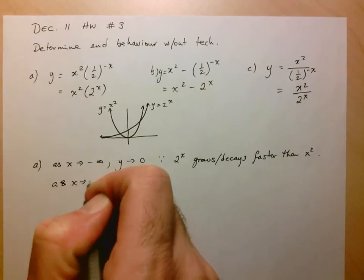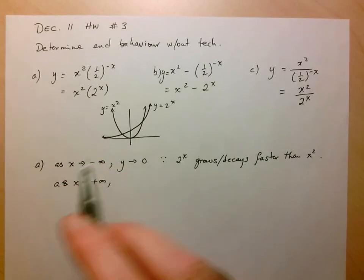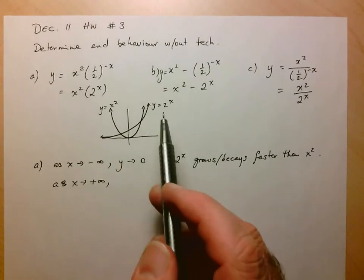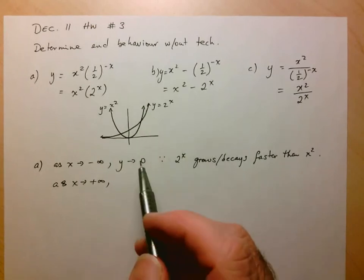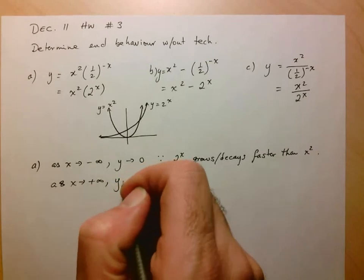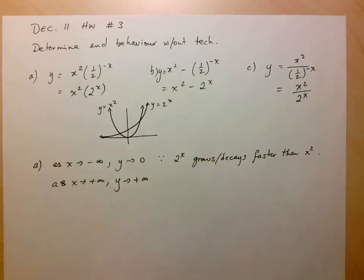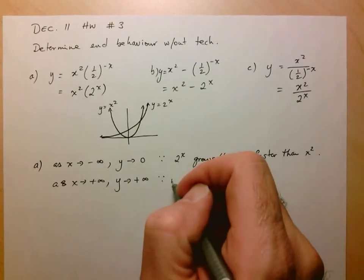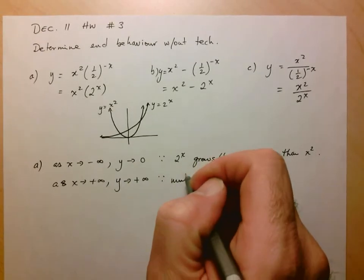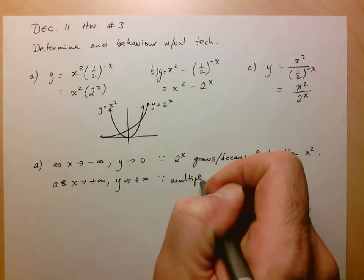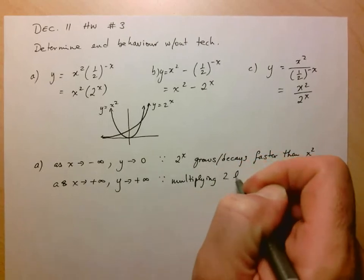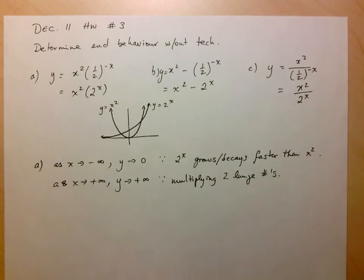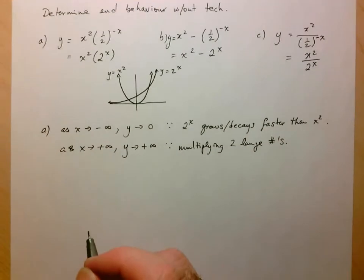As x goes to positive infinity, I'm just multiplying two really large numbers, so I'm just going to get another large number — there's no real analysis to do here. We can see clearly that y is going to go to positive infinity since we're multiplying two large numbers, which is just going to give us another large number. That's the first one.